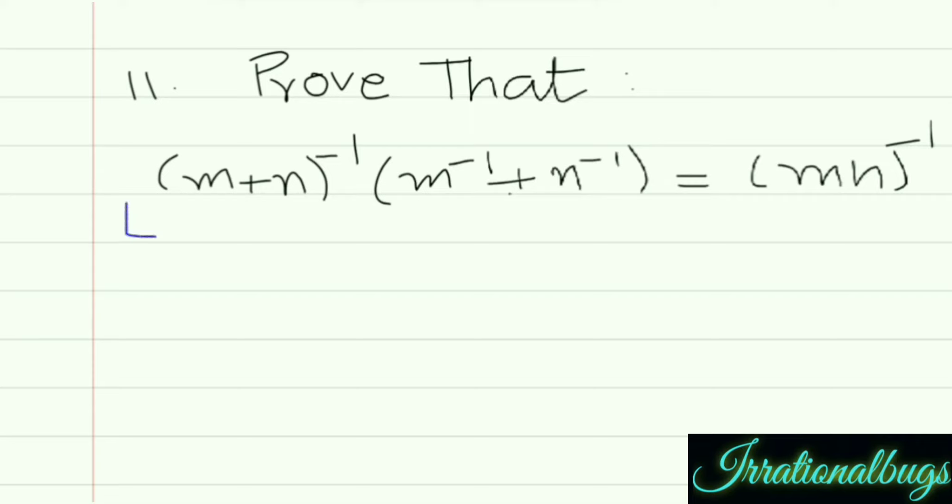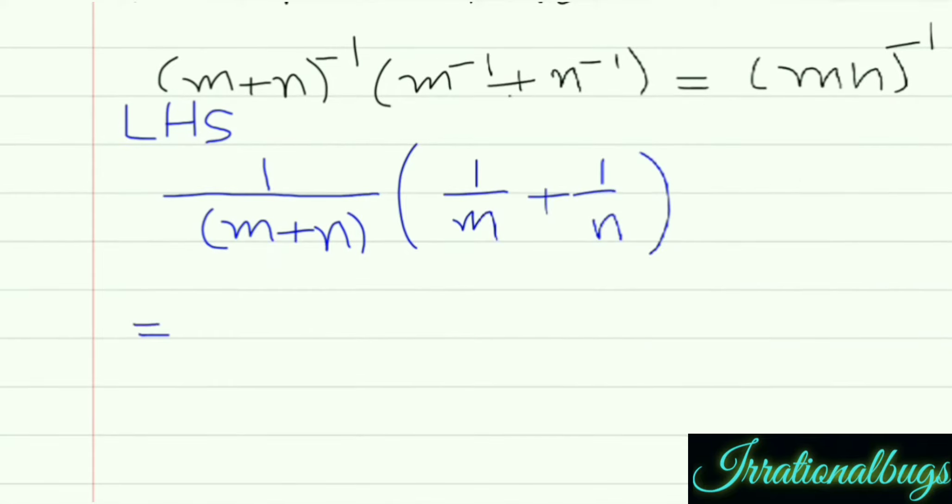So we start with left side. First of all, we are going to change inverse, so 1 upon m plus n within bracket, again inverse, 1 upon m plus 1 upon n. Inverse we are going to change reciprocal, further solve 1 upon m plus n as it is.